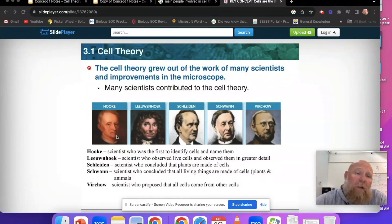After him comes Leeuwenhoek. He's the scientist that observed live cells and observed them in greater detail than Hook. He basically took the microscope that Hook was using and made it better, so he was looking at these live cells much better than Hook was. In fact, Hook was looking at dead cells from tree bark. All he saw was the decayed portion of the cell.